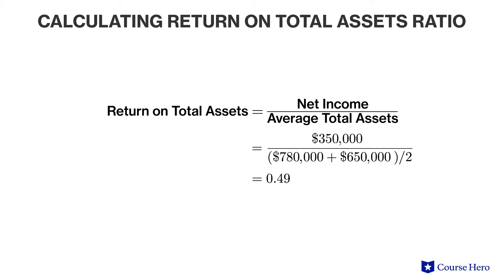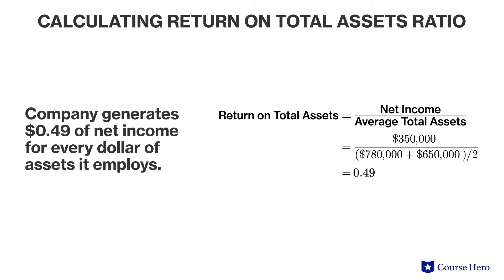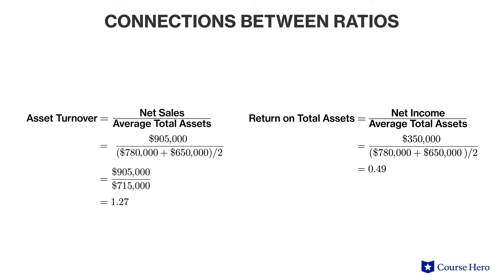The result, 0.49, indicates that the company can generate forty-nine cents of net income for every dollar of assets it employs. It is important that you see connections among all these ratios. For example, the denominator in the return on assets ratio and the asset turnover ratio is the same — average total assets — however, the numerator in the asset turnover ratio is net sales, while the numerator in the return on assets ratio is net income. Net income is a subset of net sales.